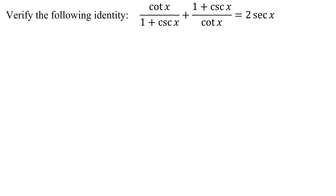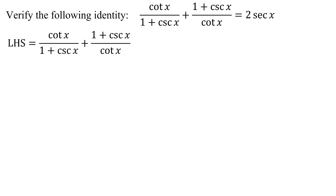When working with identities, we always want to start with the more complicated side, and that's very obvious in this case. So I'm going to start working on the left-hand side. I could work on this identity by writing all these trig functions in terms of sines and cosines, but notice on the left-hand side I only have two trig functions: the cotangent and the cosecant function. And remember, there is a Pythagorean identity that relates these two functions.